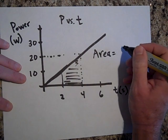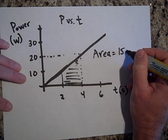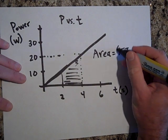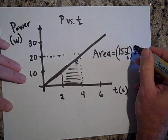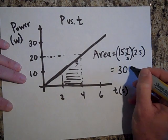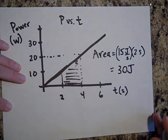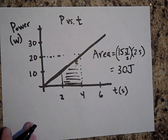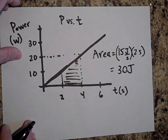And so the area is going to be 15 watts or joules per second times two seconds. That's 30 joules and that's 30 joules of work done, and that's also 30 joules of energy that changed forms.